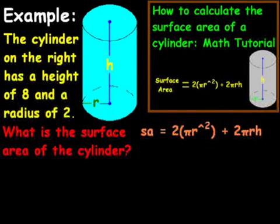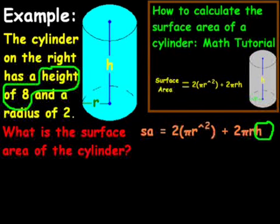Now, what we're going to have to do is we're going to look at what we know and try to figure out what we don't know, which is the surface area of the cylinder. Well, if you look at the height there, I'm going to circle it in green. We know that the height is 8.